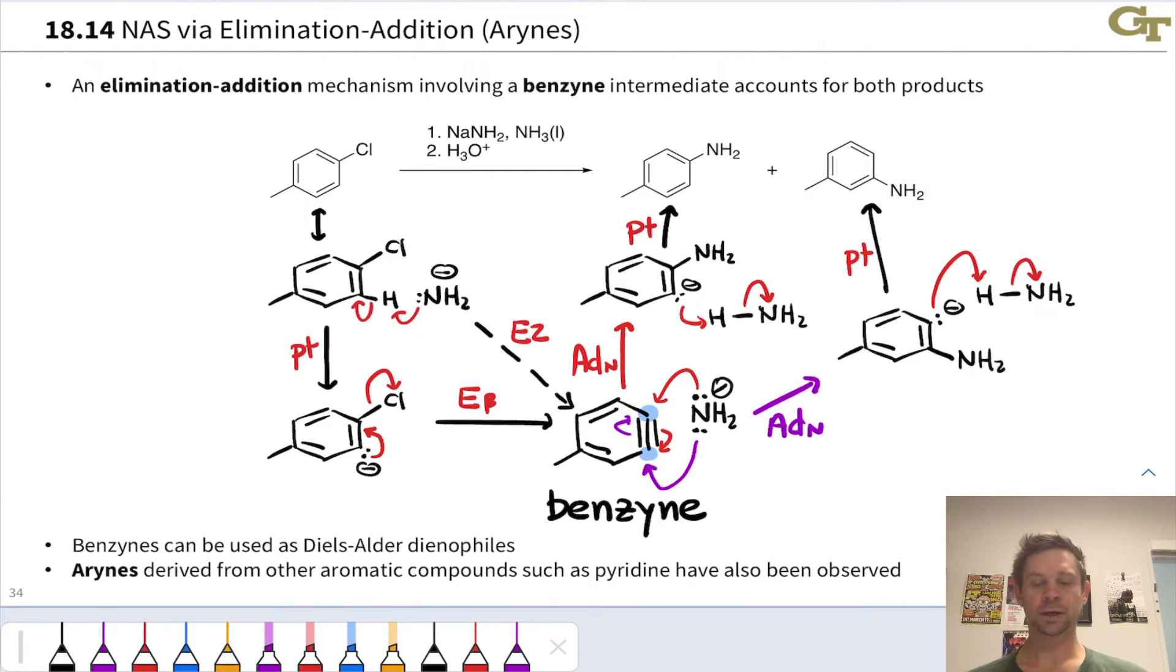And notice we arrived at this product because elimination made this bottom carbon electrophilic. Even though it didn't have a leaving group originally, it becomes electrophilic after elimination of the leaving group. That's how we were able ultimately to end up with the meta product.